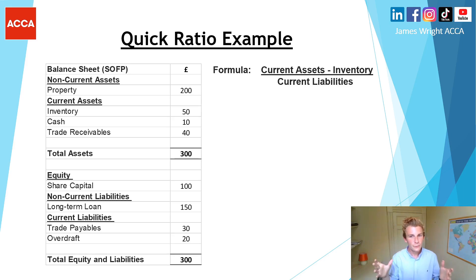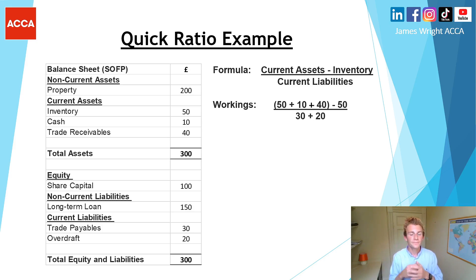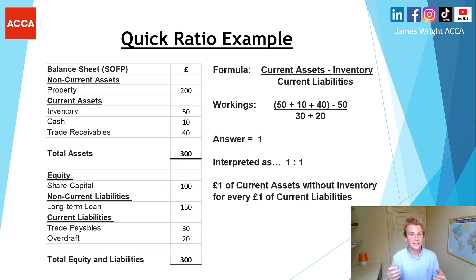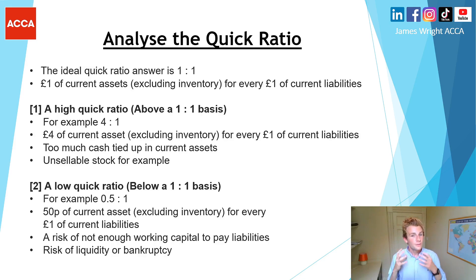Looking at a real-world example with figures pulled from a balance sheet — you can see the formula on screen alongside a balance sheet with two 300s for total assets and total equity and liabilities, reflecting the accounting equation. Make sure to show your workings and write down the formula. In this case the answer comes to one, representing a one-to-one basis: one pound's worth of current assets excluding inventory for every one pound of current liabilities.